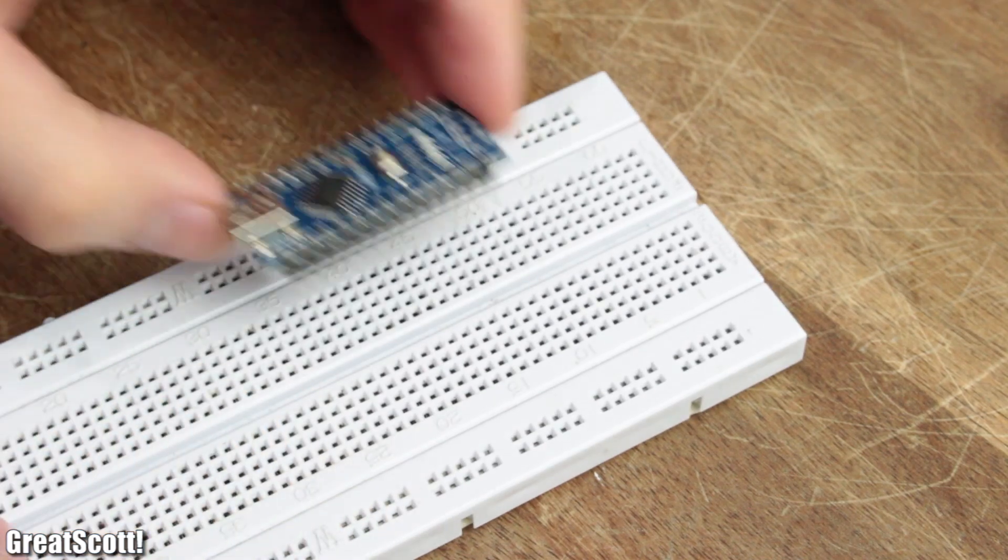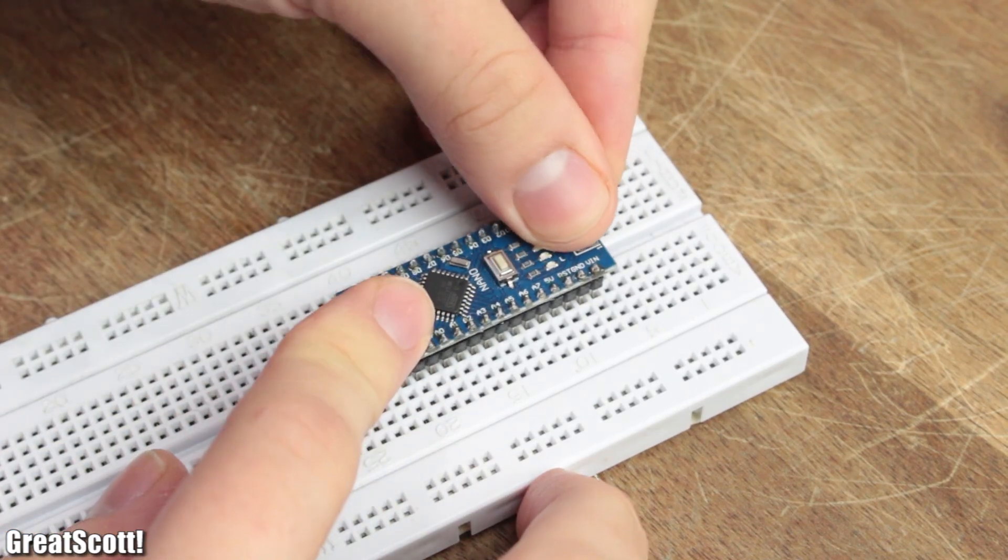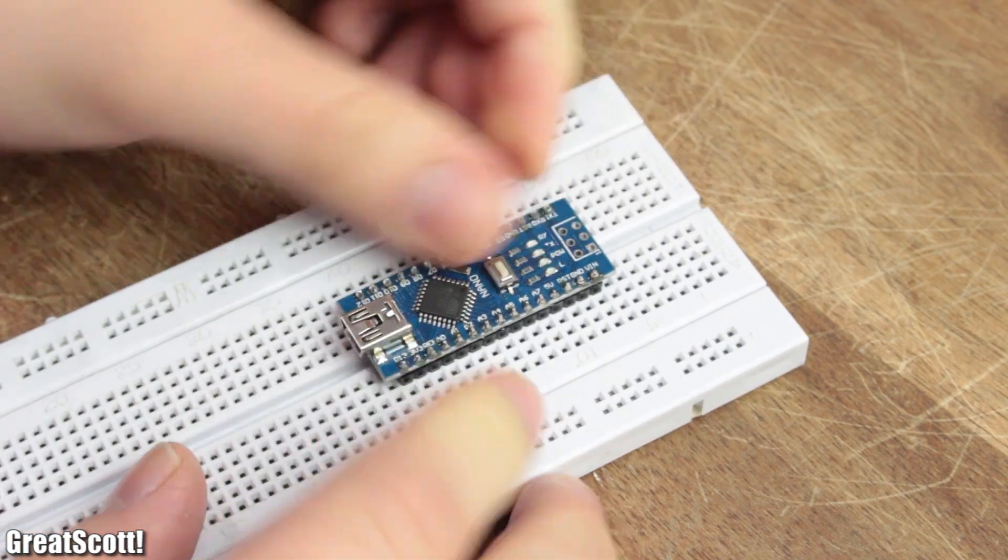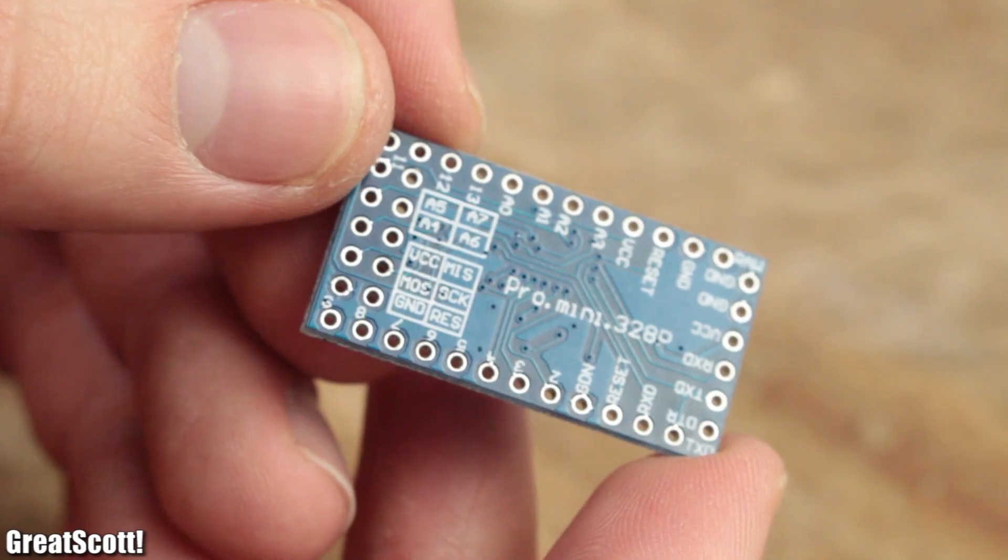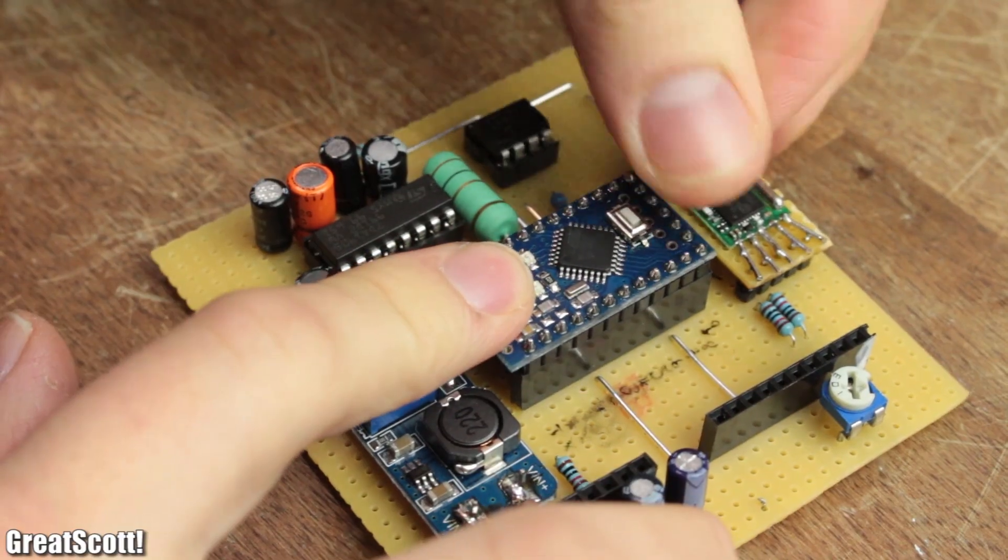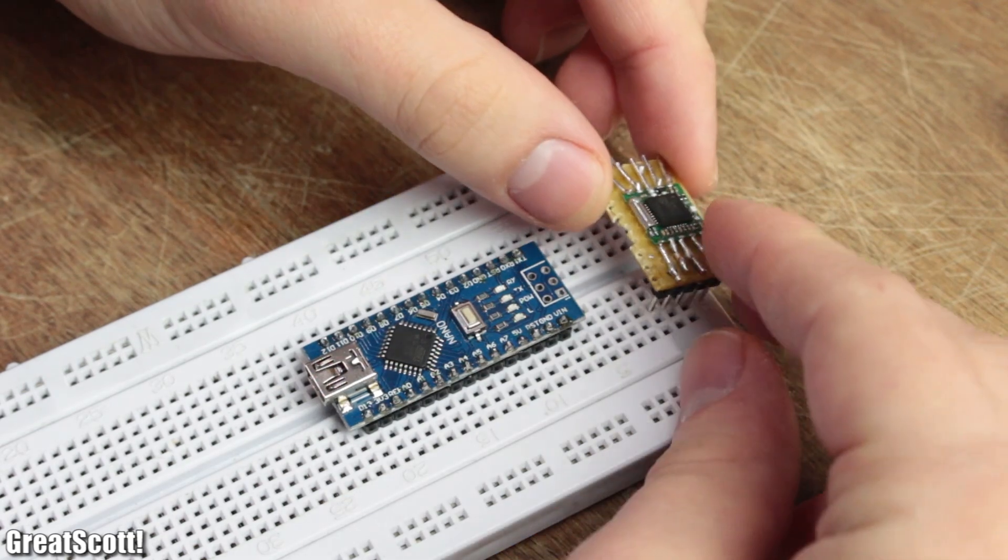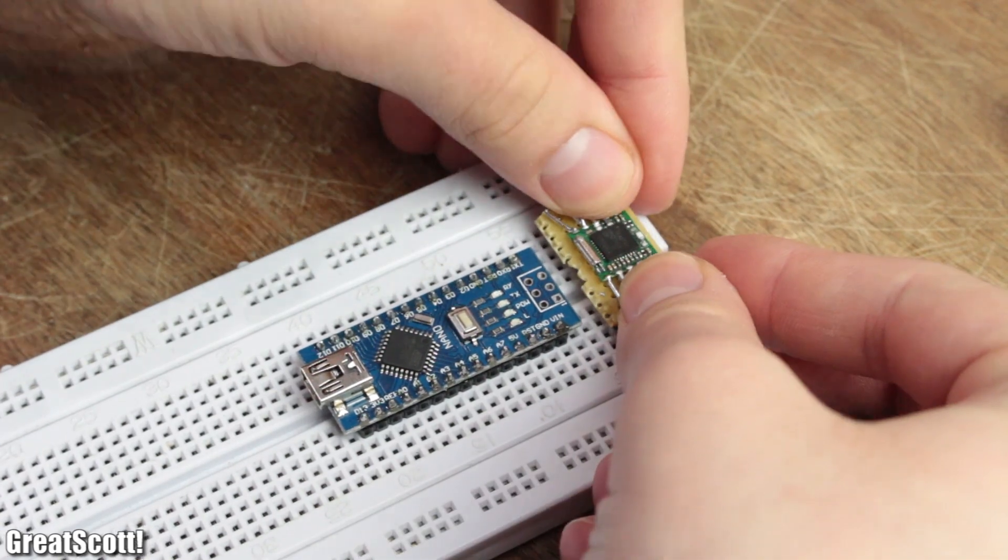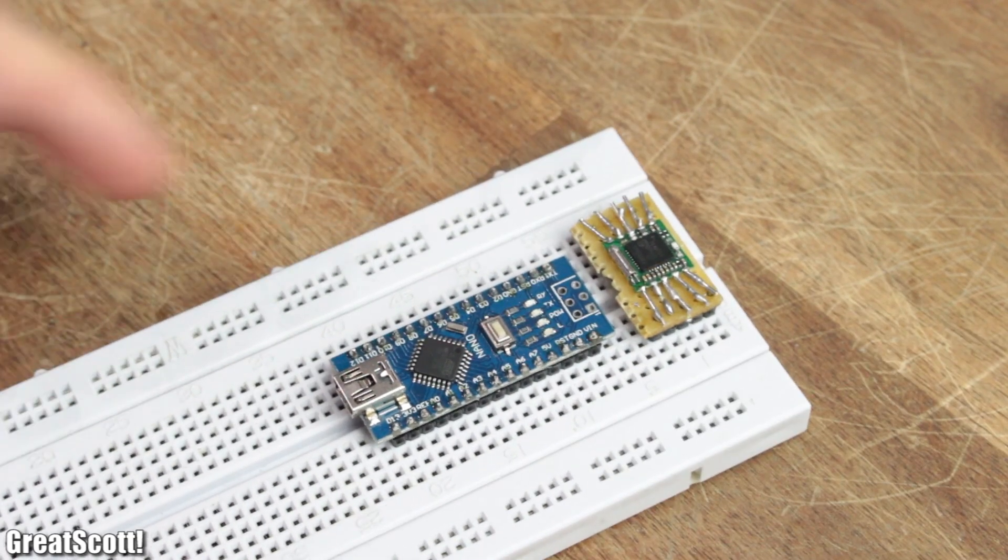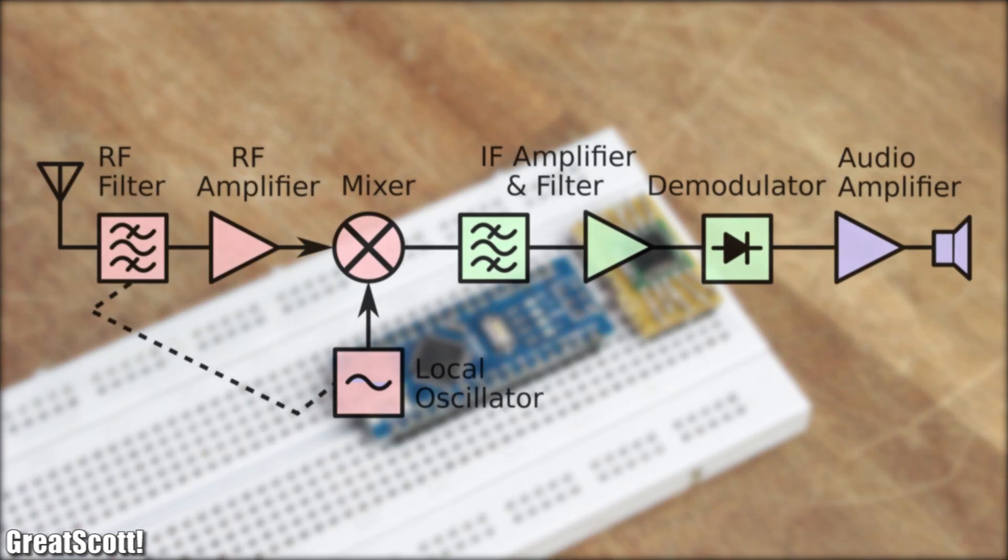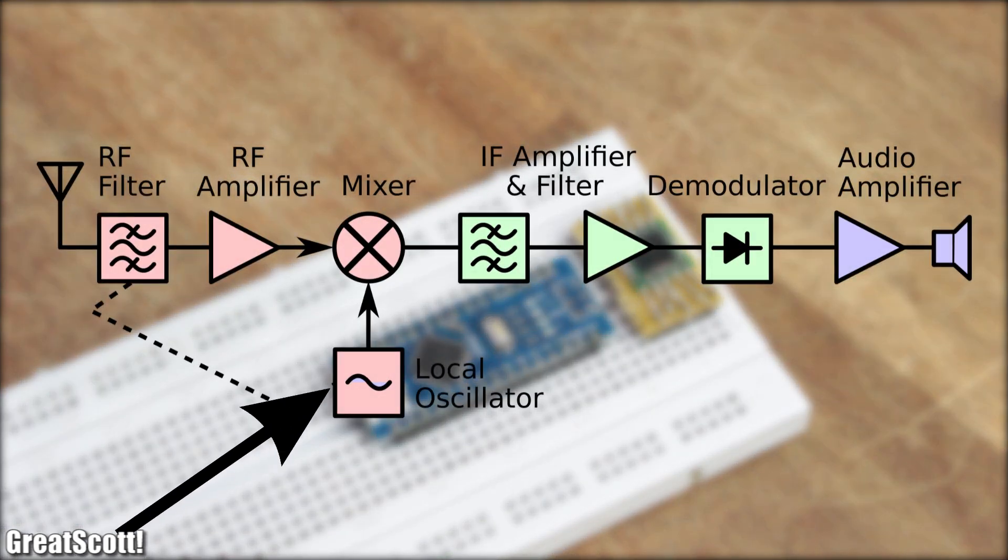For the prototype of the radio I will use an Arduino Nano as the brains of the organization. But later on I will switch to an Arduino Pro Mini to save a bit of space. The first part I then added to the setup was the TEA-5767.